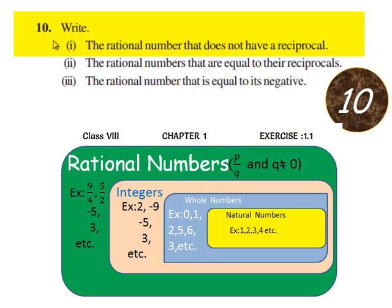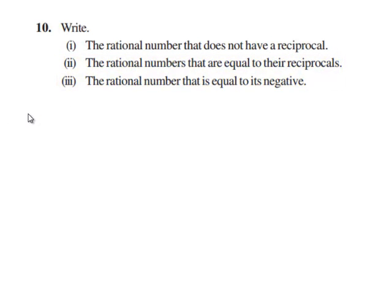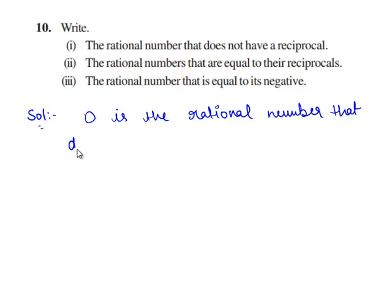Now, let us move on to the tenth question. The question is: write the rational number that does not have a reciprocal, the rational numbers that are equal to their reciprocals, and the rational number that is equal to its negative. Let us go for the solution. For the first bit, 0 is the rational number that does not have a reciprocal, because there is no rational number which when multiplied with 0 gives 1.